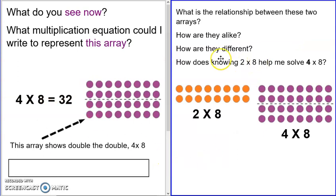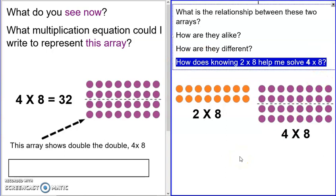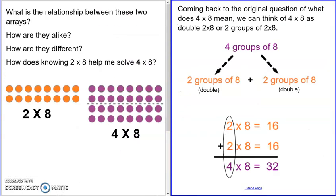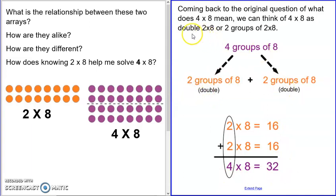So how does knowing two times eight help me solve four times eight? Pause the video and explain. Hopefully you said that you can break apart that four into two groups and two groups of eight. Two groups of eight is eight plus eight, or two times eight, or double — right? And another of the same exact thing, so we're doing this two times. Two times eight is 16, two times eight is 16 — that gives me a total of four groups of eight, which is 32. We just add the doubles together.